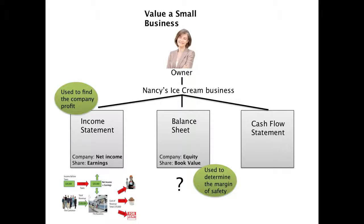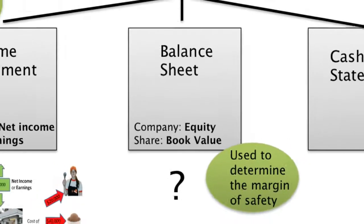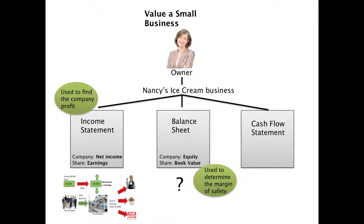Something we haven't talked about is the balance sheet. We can use the balance sheet to determine the margin of safety that you would get if you were to purchase this business from Nancy, who's asking $200,000. The cash flow statement is something we're not going to cover until Course 2. So don't worry about the cash flow statement right now — I just really want to focus on two documents: the income statement and the balance sheet.